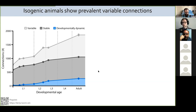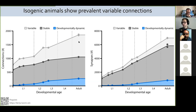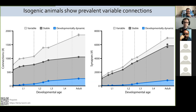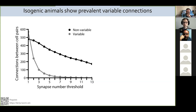Variable connections are surprisingly common, making up almost half of all connections in the adult connectome — about the same number as stable connections. This degree of variability contrasts with the widely held view that the C. elegans connectome is hardwired. Variable connections are typically weak, but they still make up about 15% of all synapses in the brain. Because of variability, synapses annotated in any one connectome may not exist in the animals you're actually doing experiments with. I'd recommend always looking at more than one connectome to ensure that connections explaining your data exist across multiple individuals. Also, some variable connections consist of many synapses, so you cannot simply set a synapse number threshold to exclude them.